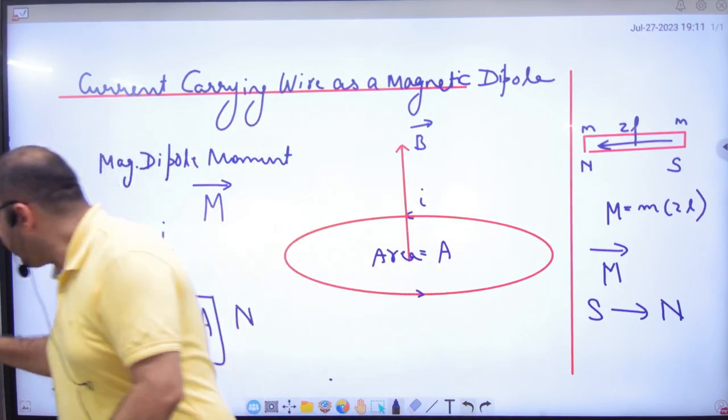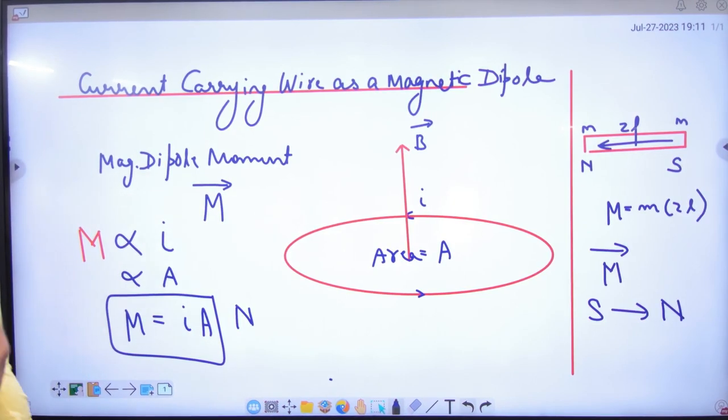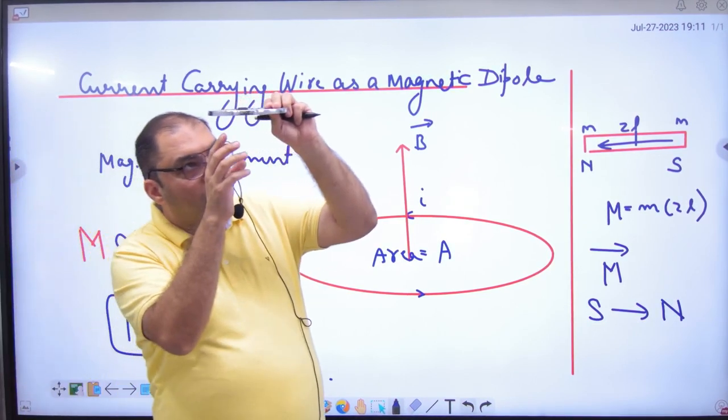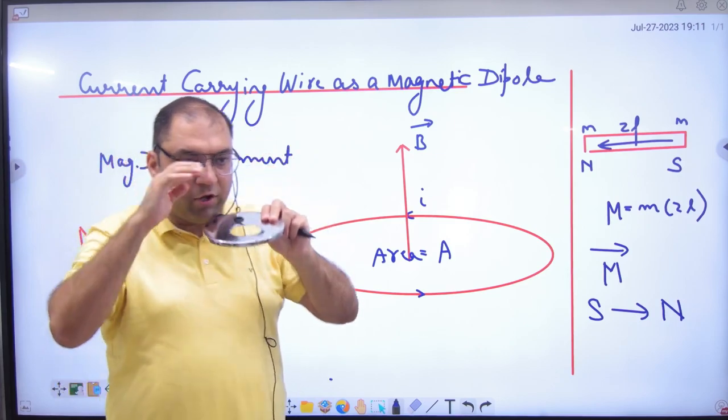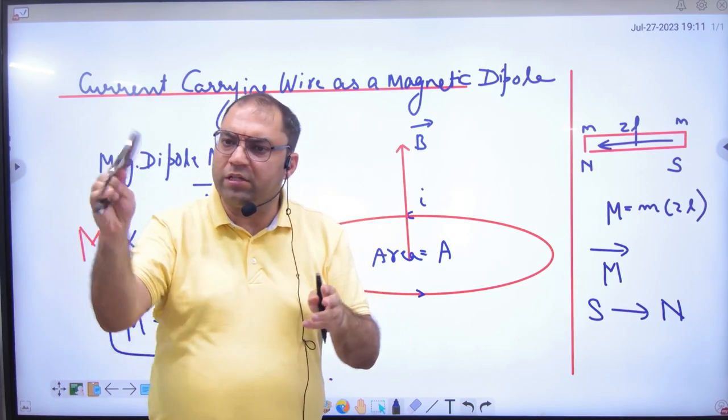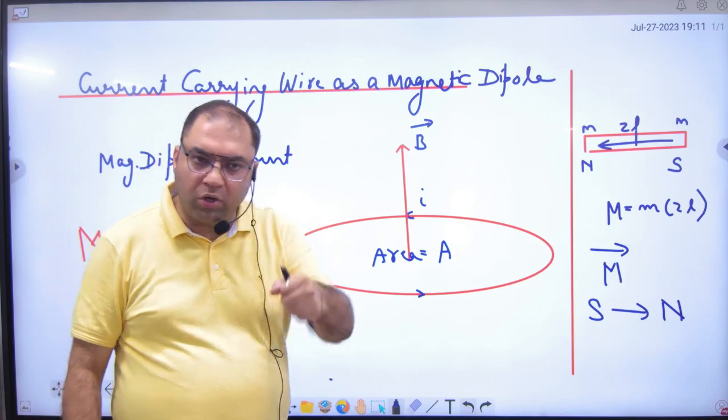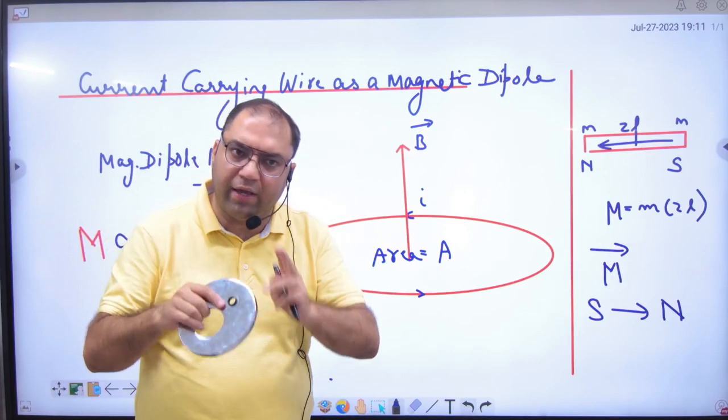Let's take a loop. Where is the current? If it is clockwise, it is south. Anticlockwise? North. So south to north. There is a shortcut to find capital M.